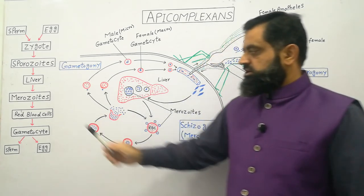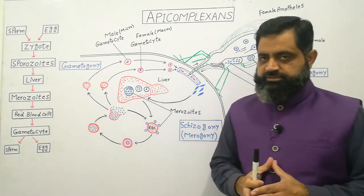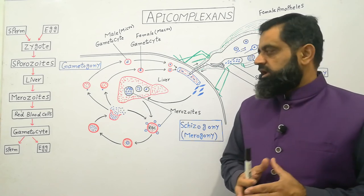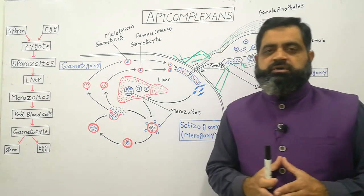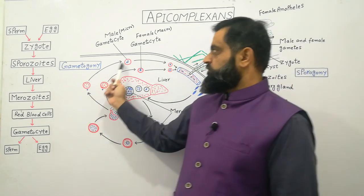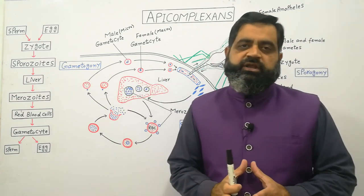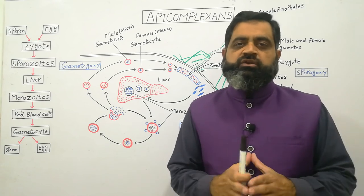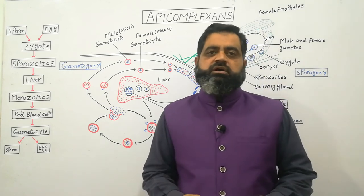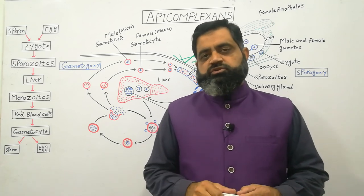Merozoites released from the liver cells enter and attack the red blood cells of the healthy person. Inside the RBCs they multiply by mitosis, increasing in number, and cause paroxysm — the symptoms of malaria. Some of the merozoites change into micro-gametocytes and macro-gametocytes, which later become sperm and egg, fusing again to complete the life cycle of Plasmodium. In this way we have understood Apicomplexa, the life cycle of Plasmodium, and the symptoms of malaria.